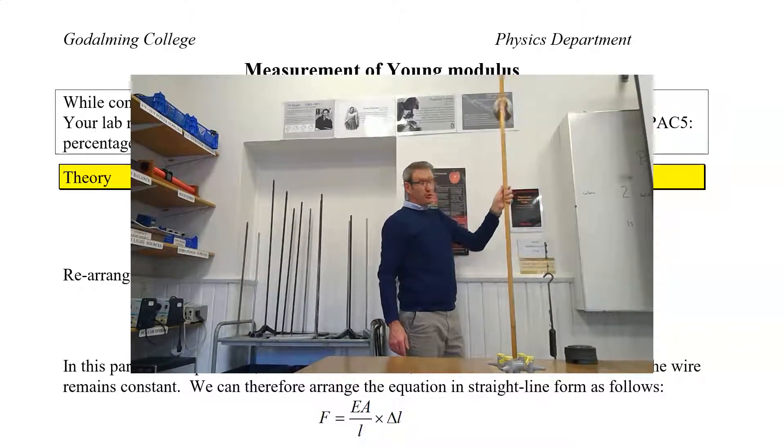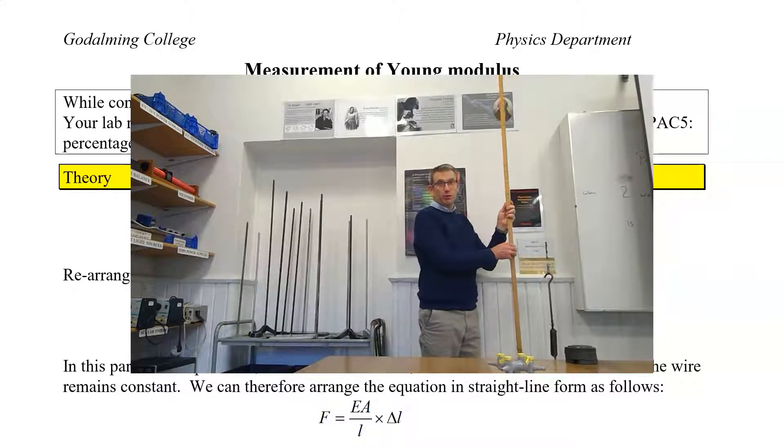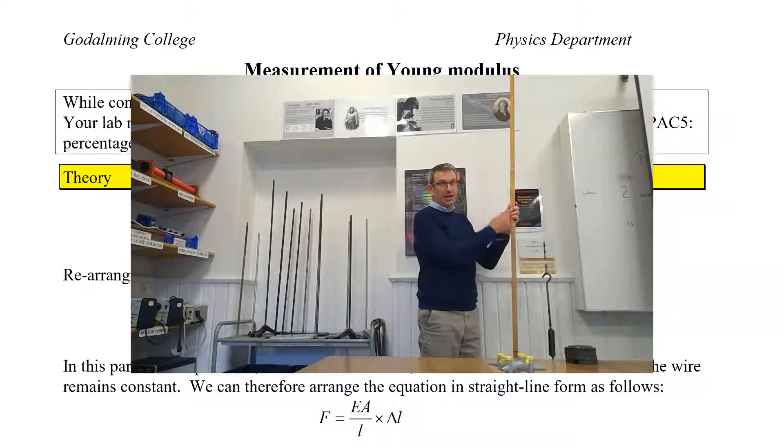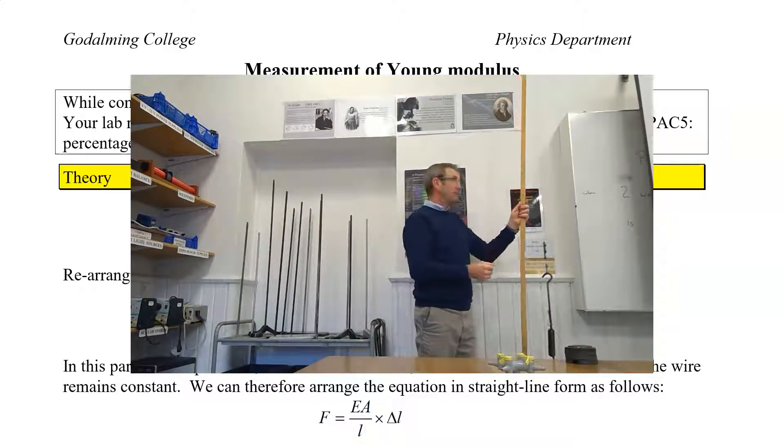We are going to just treat this as being one measuring device, so therefore you wouldn't have to cope with the uncertainty of the rulers being strapped together.